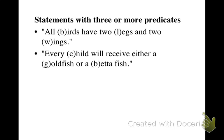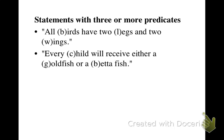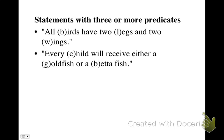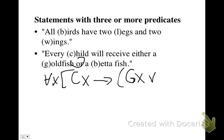Here we have another universal statement: every child will receive either a goldfish or a betta fish. Again, we need to pay attention to which predicates are the subject and which are things being said about the subject. The subject is the children. So for every x, if x is a child, then x is either going to receive a goldfish or it will receive a betta fish. The statement is not saying it gets both — it gets one or the other.